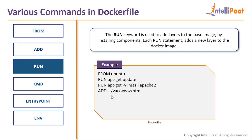The third command is RUN. Whenever you want to run any command in the container - for example, 'apt-get update' and 'apt-get install apache2' - you use the RUN command in the Dockerfile. The '-y' flag signifies yes to any installation prompts, so specifying '-y' implicitly in the Dockerfile means it will continue the installation without any prompts. The RUN command executes any terminal command inside the container.